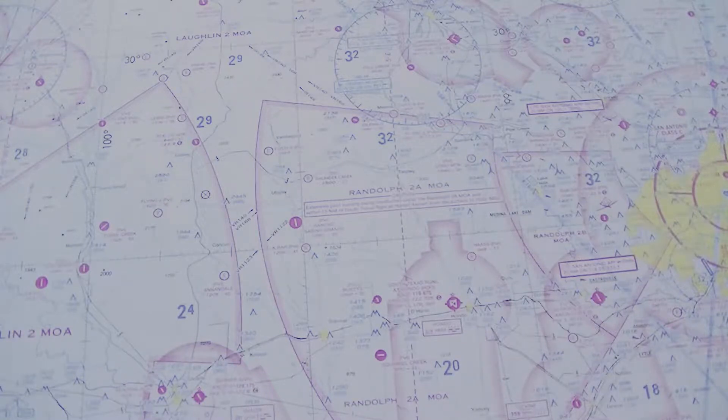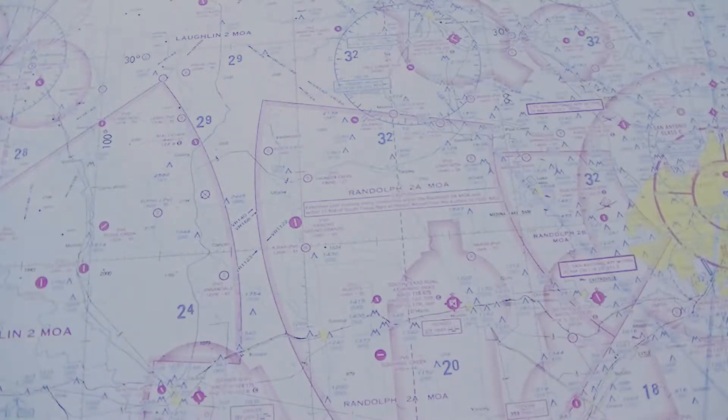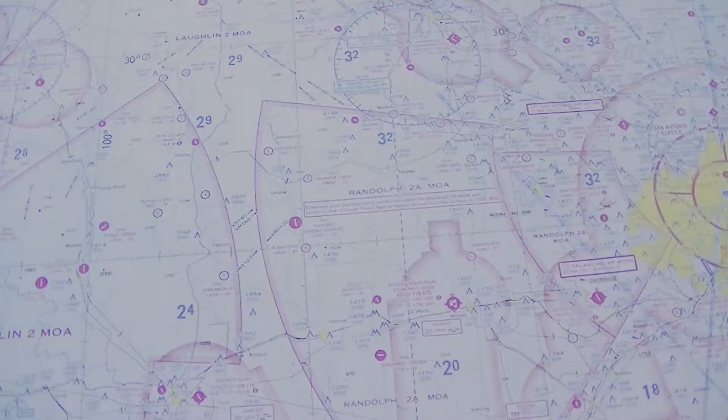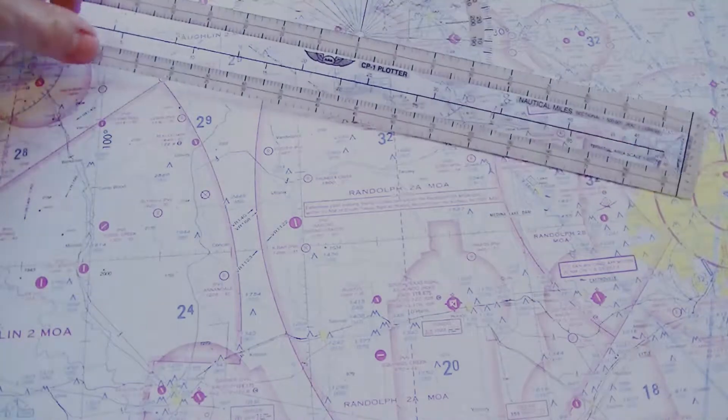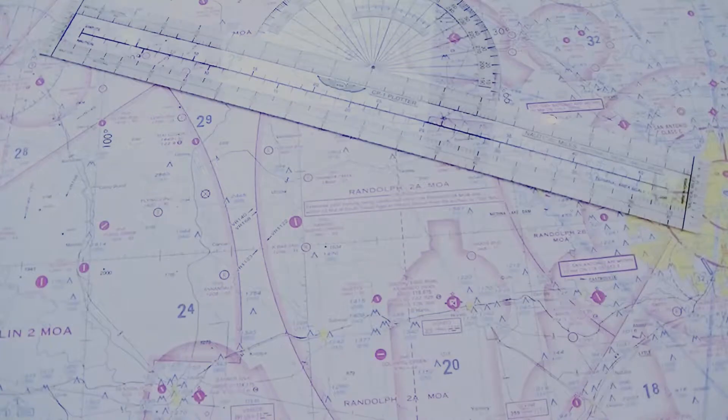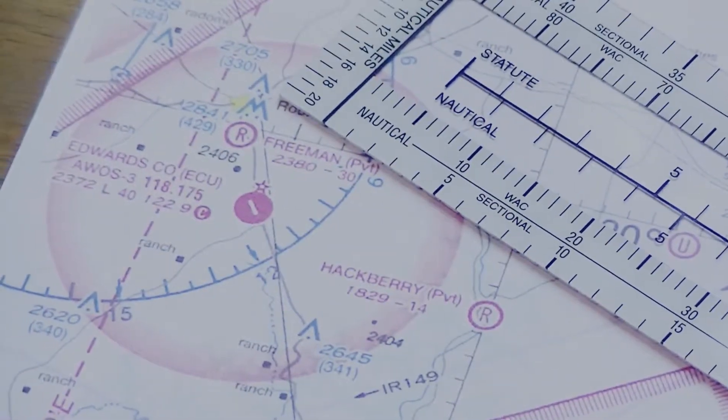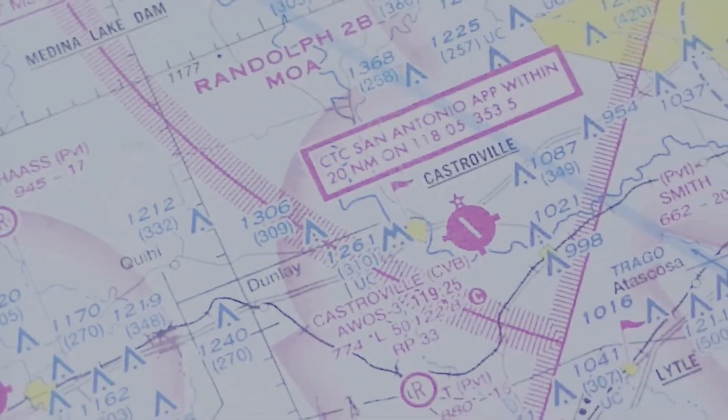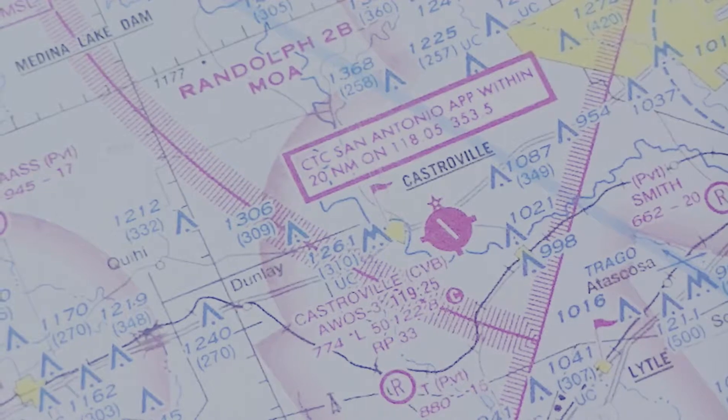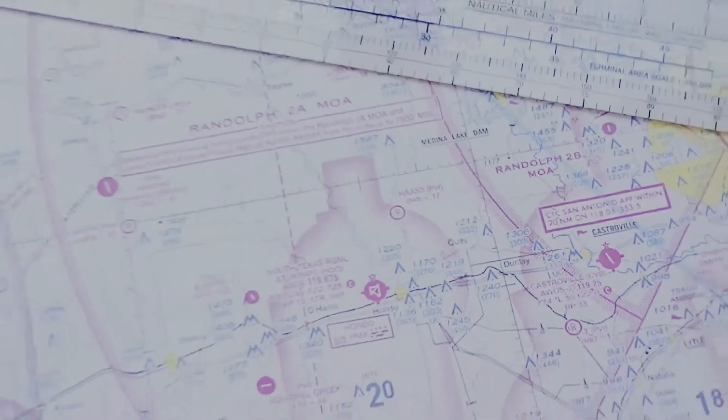First of all, we need to take our plotter and find the distance between the two airports. In this example, I'd like to go from Edwards County Airport, which is way up here, all the way down to an airport just southwest of San Antonio International called Castroville Airport.